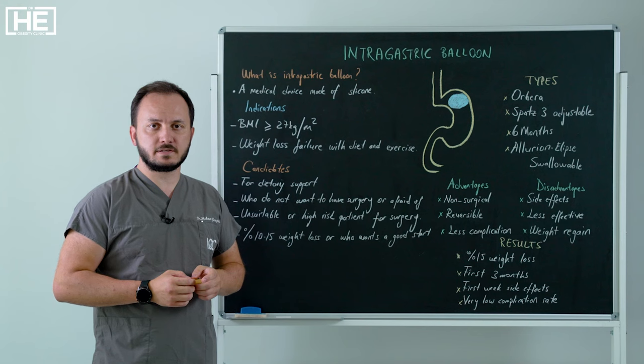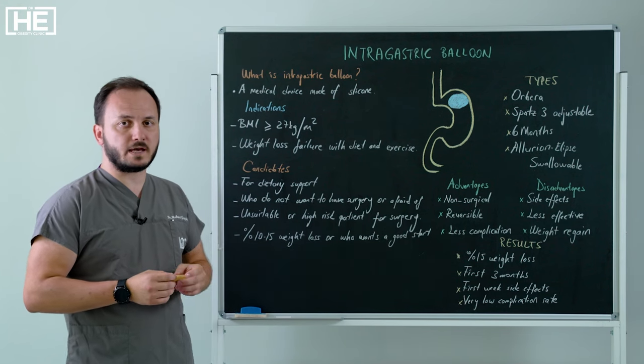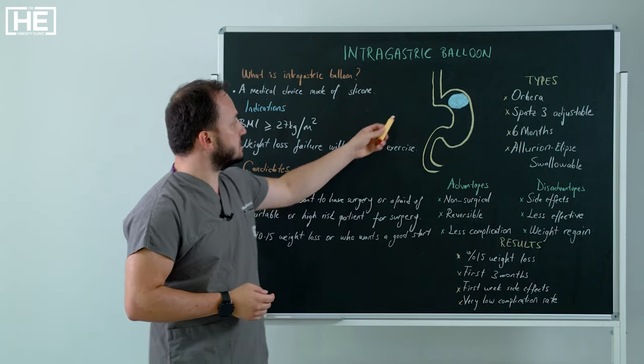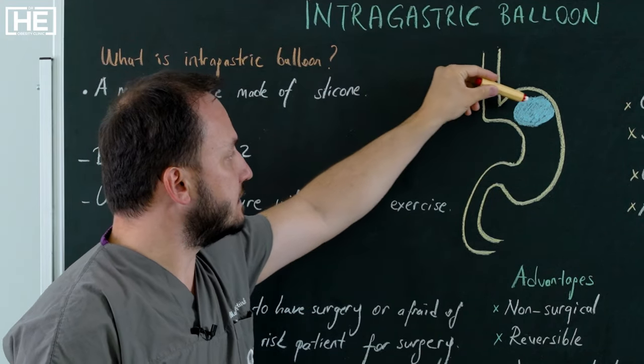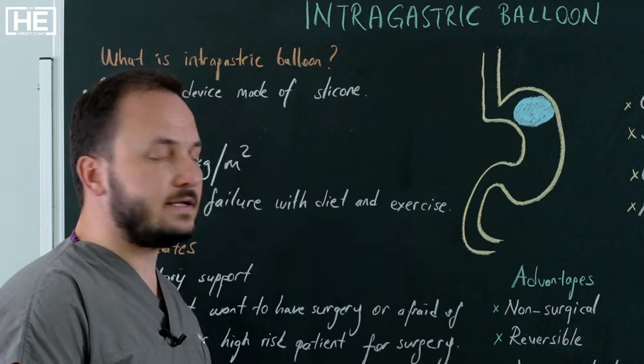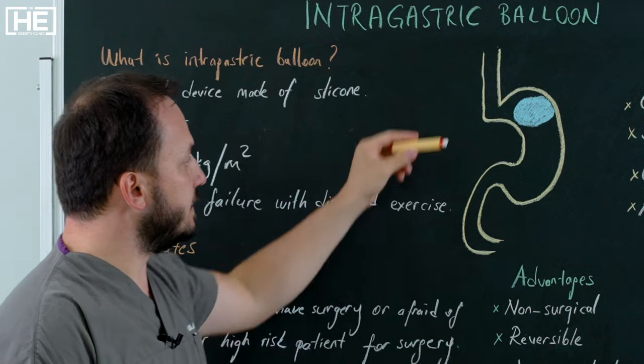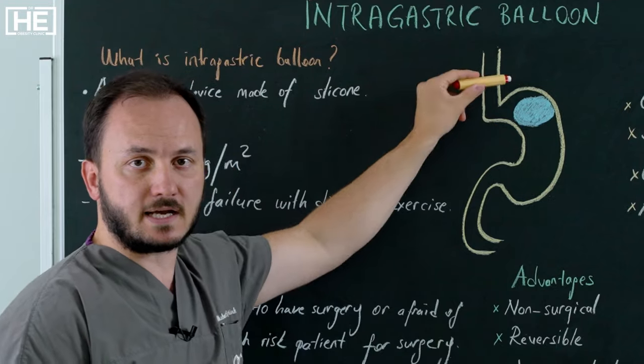We have two different methods. Most of balloons applied with the endoscopy. This is our stomach and this is esophagus. We start with the endoscopy and we check the stomach inside and after being okay, we put the balloon and make it big up the stomach size.